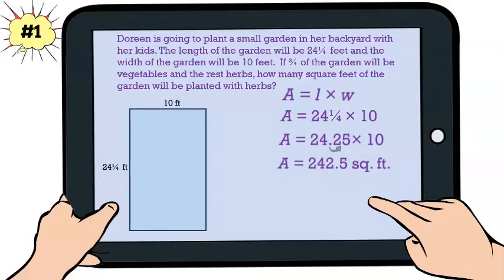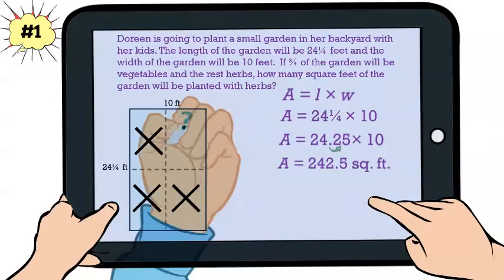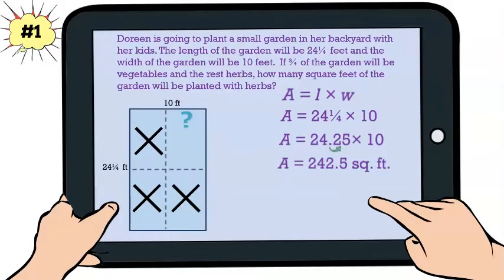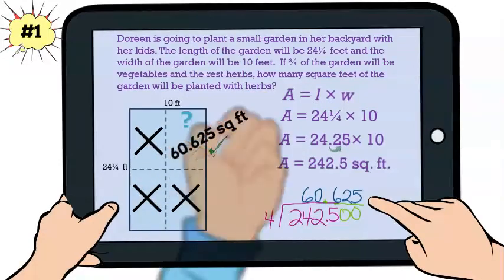This is not the final answer because we want to know the area of the section of the garden planted with herbs. Since three fourths of the garden is planted with vegetables, that means that one fourth is planted with herbs. So to find this area, we simply take the total area and divide by four.